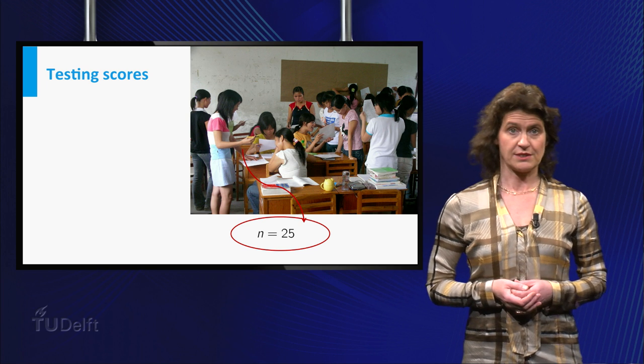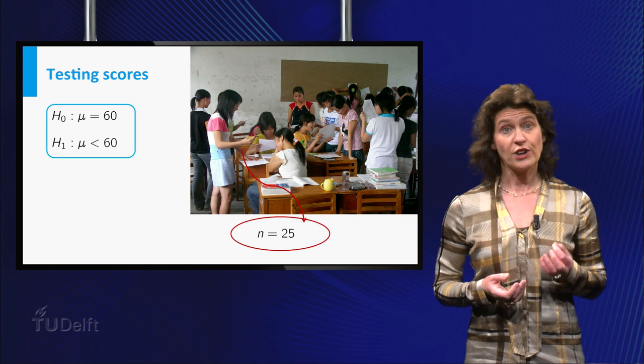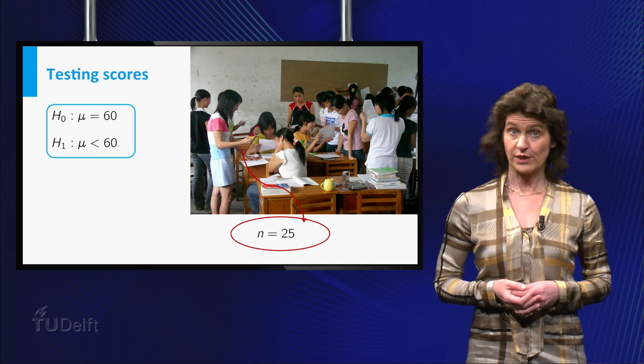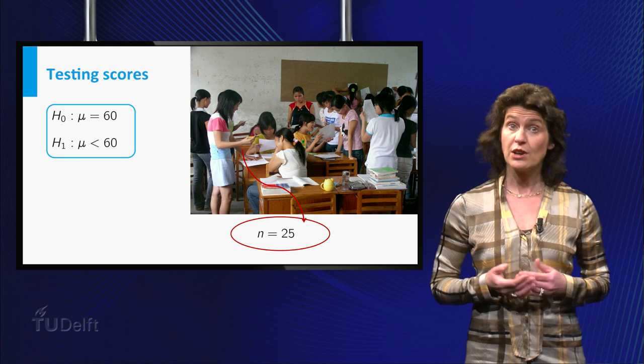What hypotheses do you test? Well, the null hypothesis is that the school does meet the national norm of 60 points. And the alternative hypothesis is that the score is below this average.